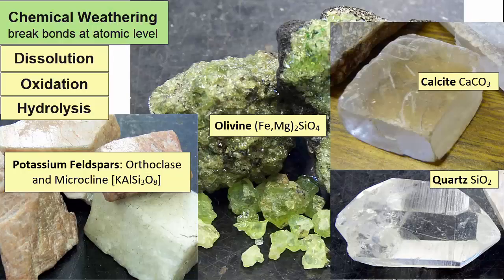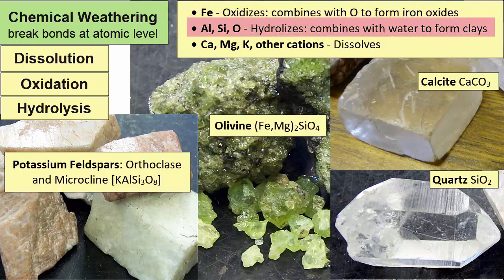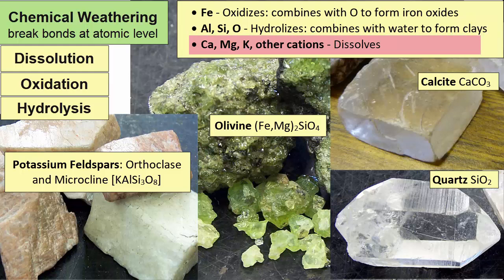Which of the three main chemical weathering processes will occur in a rock depends on the minerals within. The first step is to look closely at its chemical formula. If there is any iron in the rock, then there will be oxidation and rust will form. If there is aluminum, silicon, and oxygen altogether, then a clay mineral will form. If the mineral has electron-giving ions like calcium, magnesium, or potassium shown at the left of the formula, these ions tend to be dissolved and carried away by water, though some might end up part of a clay mineral that forms.